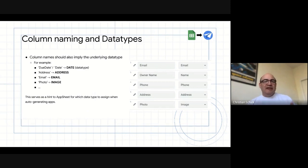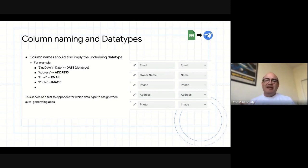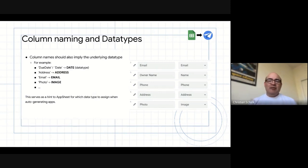A few points on column naming and data types. AppSheet is intelligent in that it has pre-designated data types — email, image, address, photo, and such. When it takes the actual sheet data, it's able to correctly decide the best fit data type for the data in your sheet. If it sees photos, it will say that's an image. If it sees email, it assigns it as email. This actually dictates the behavior of the generated app. So you don't have to hand-code or hand-set up a lot of these things — it comes out of the box. Just keep that in mind: you might want to make some column names a little more descriptive so those hints can be picked up by AppSheet.